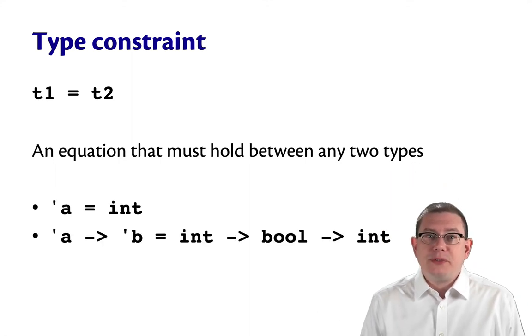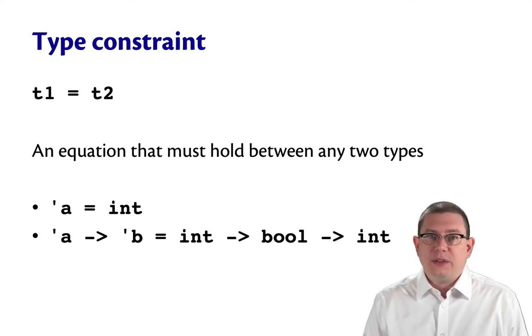Here are two examples of type constraints. In the first one, we have alpha equal int. The second constraint says that alpha arrow beta equals int arrow bool arrow int. That's a little more complicated.